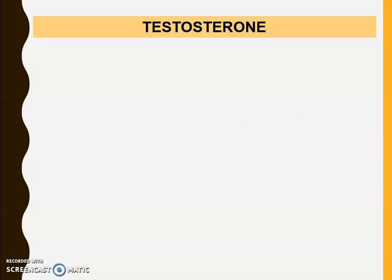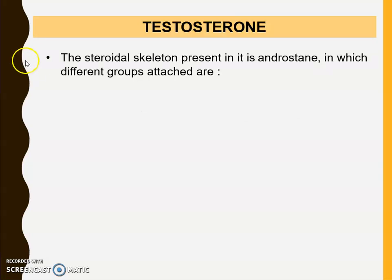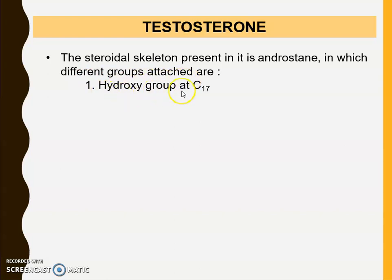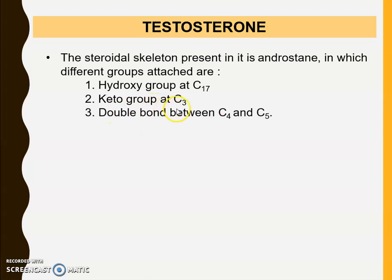The first drug is Testosterone. The steroidal nucleus present in it is androstane, in which different groups are attached: a hydroxy group at C17 position, a keto group at C3 position, and a double bond between C4 and C5 position.